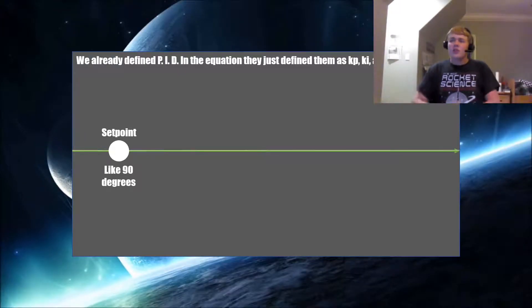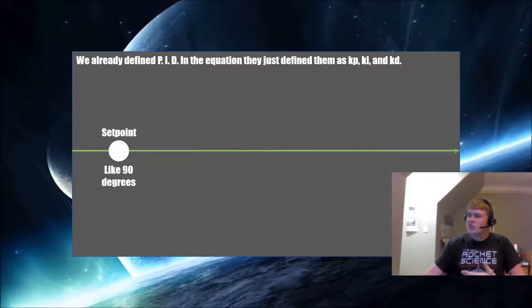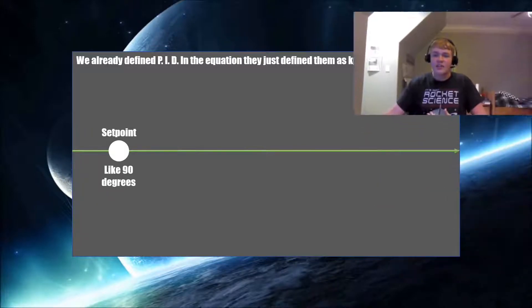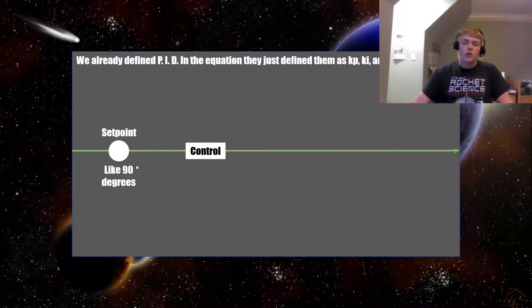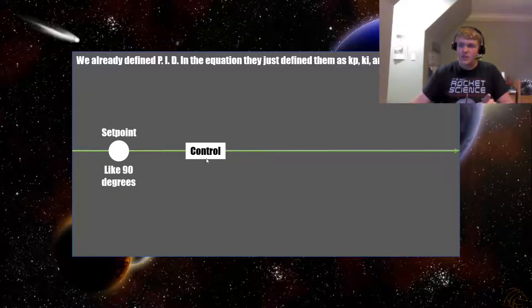We already defined what P, I, and D is, so, as you can see up here, and my camera might be blocking it, we're going to say KP, KI, and KD, like the equation put them. Okay, so we have here, we have our set point. Then we have our control. That is our P, I, and D variables, but we'll go into that a little bit more in a second.